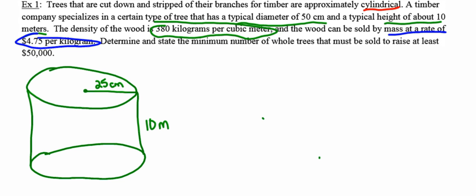It says determine and state the minimum number of whole trees that must be sold to raise at least $50,000. I notice that this density is expressed per cubic meter, and the fact that I'm looking at cubic meters here is a key indication to me that we're looking for volume.